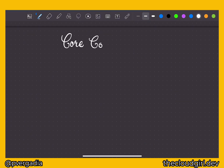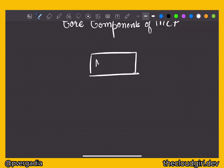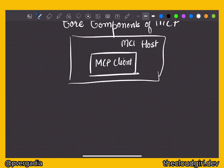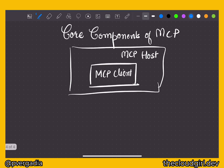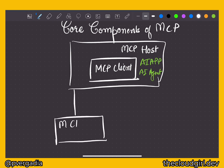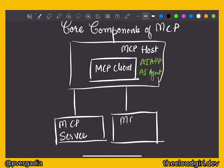What are the core components of MCP, or its architecture? You have an MCP client — this is where the LLM or the AI resides — and that is hosted in an MCP host. The host carries this client application, which could be your chatbot, your AI web app, your mobile app, or anything you're powering with AI. That client is then connected to your MCP servers, and you could have multiple MCP servers.